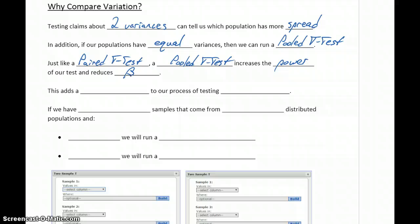We want as many opportunities as we can to reduce error in our hypothesis testing. Running a paired test when we have dependent samples helps us do that.